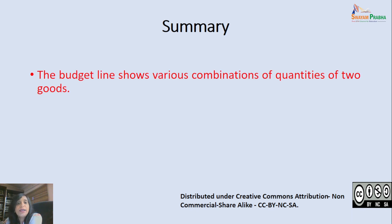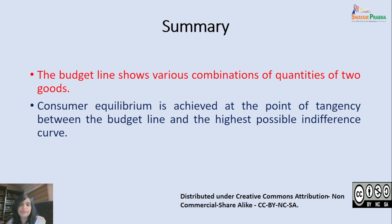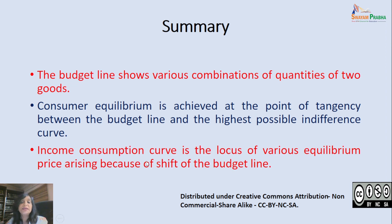So, learners, what have we learnt today? We have seen that the budget line shows the various combinations of two goods which a consumer can buy with the given money income and the prices of those two goods. Consumer equilibrium is achieved at the point of tangency between the budget line and the highest possible indifference curve. We derived the income consumption curve as the locus of various equilibrium points arising due to shifts in the budget line as income changes. From the income consumption curve, we derive the Engel's Curve.